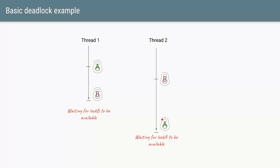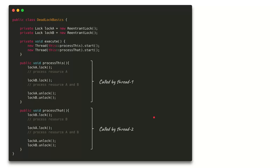Thread 2, after acquiring Lock B, is waiting for Lock A to be released. So Thread 1 has one lock and is waiting for the other, while Thread 2 has the other lock and is waiting for the first. There is no way for these two threads to proceed any further, and this scenario is called a deadlock.